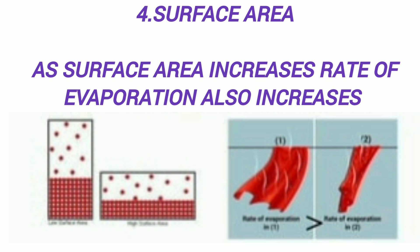Surface area and evaporation: as surface area increases, the rate of evaporation also increases. Evaporation is a surface phenomenon — particles on the surface that gain enough kinetic energy to escape the force of attraction of other particles are converted to gas. Because of that, if surface area is more, the rate of evaporation will be high.